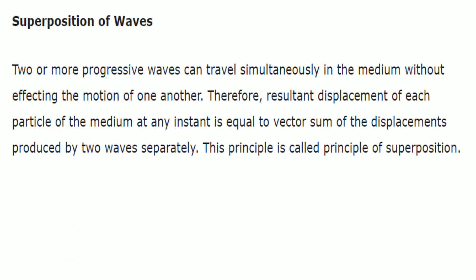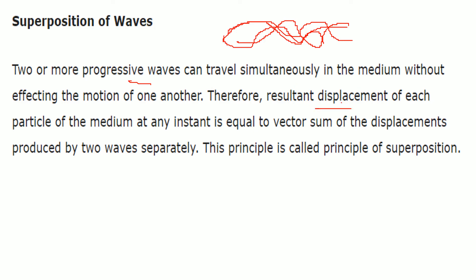Superposition of waves: when we have one wave and another wave, the combined result is the superposition. Two or more progressive waves can travel simultaneously in the medium without affecting each other's motion. The resultant displacement of each particle of the medium at any instant is equal to the vector sum of the displacements produced by each wave separately. This is called the principle of superposition.